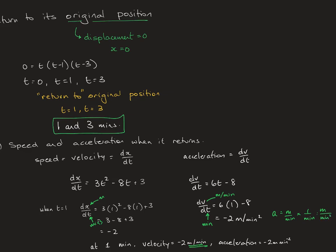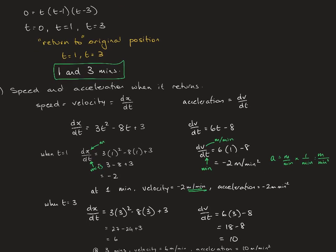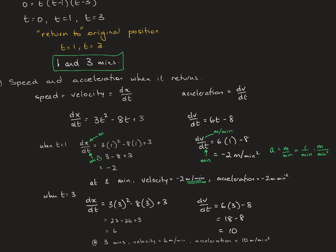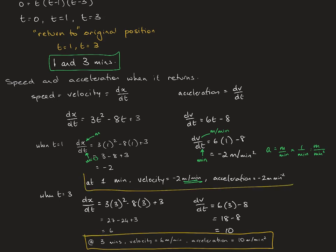We do the same for T = 3, since the pigeon returned to its original position at two times. At T = 3, the velocity is 6 meters per minute and the acceleration is 10 meters per minute squared. These answers are boxed so they're easy for the marker to identify.